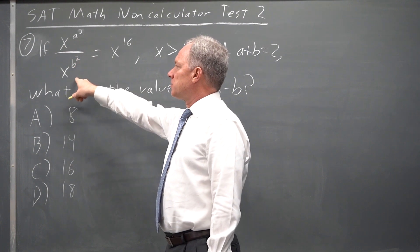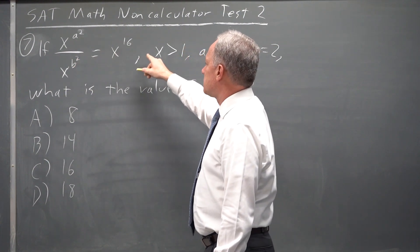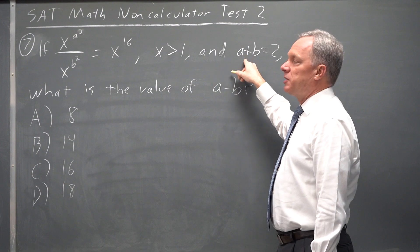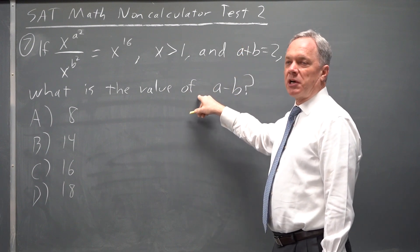If x to the a squared over x to the b squared equals x to the 16 and x is greater than 1, and a plus b equals 2, what's the value of a minus b?